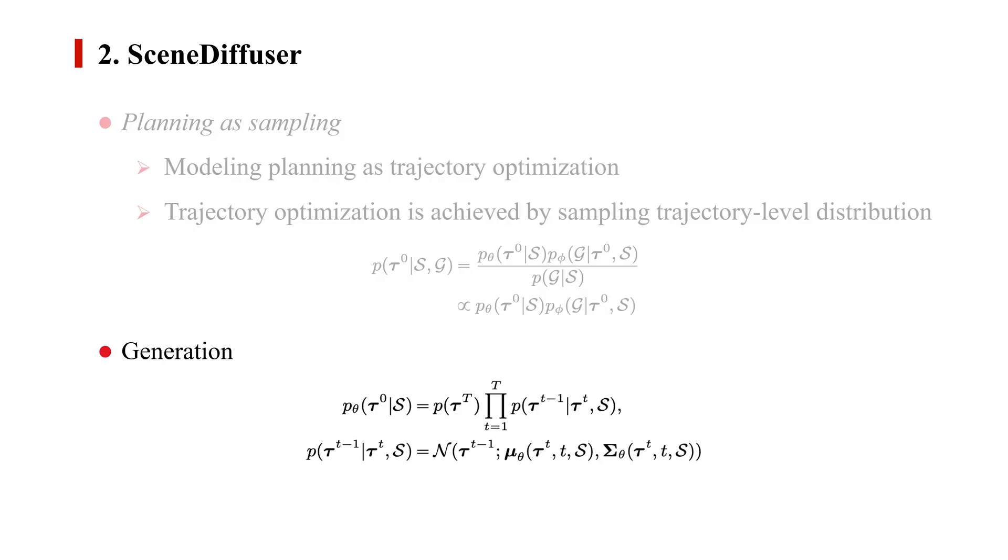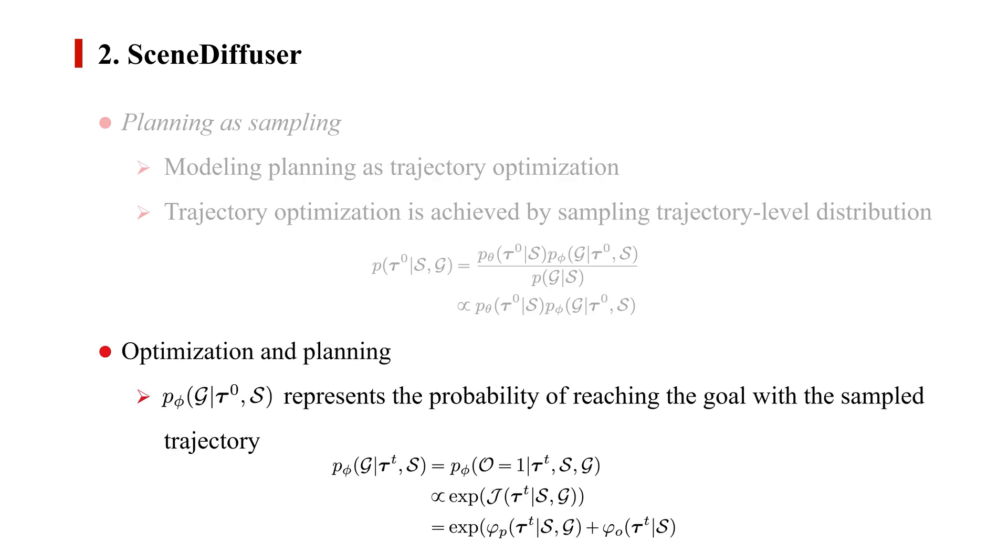We use a conditional diffusion model to generate certain trajectories with the scene condition. We use the following formula for the probability of reaching the goal with the sampled trajectory, where the goal can be flexibly defined by customized objective functions in various tasks.